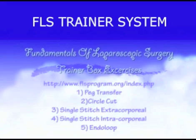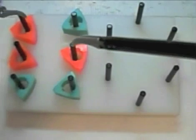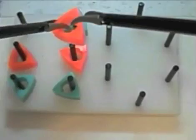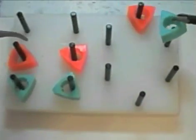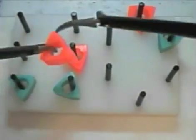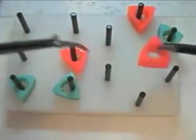Task number one, peg transfer. You are given two graspers for this task. The goal is to grab the peg with the non-dominant hand, transfer it to the dominant hand, and place it on the opposite side of the board. There is no importance given to the color of the peg and ignore the order in which they are transferred.